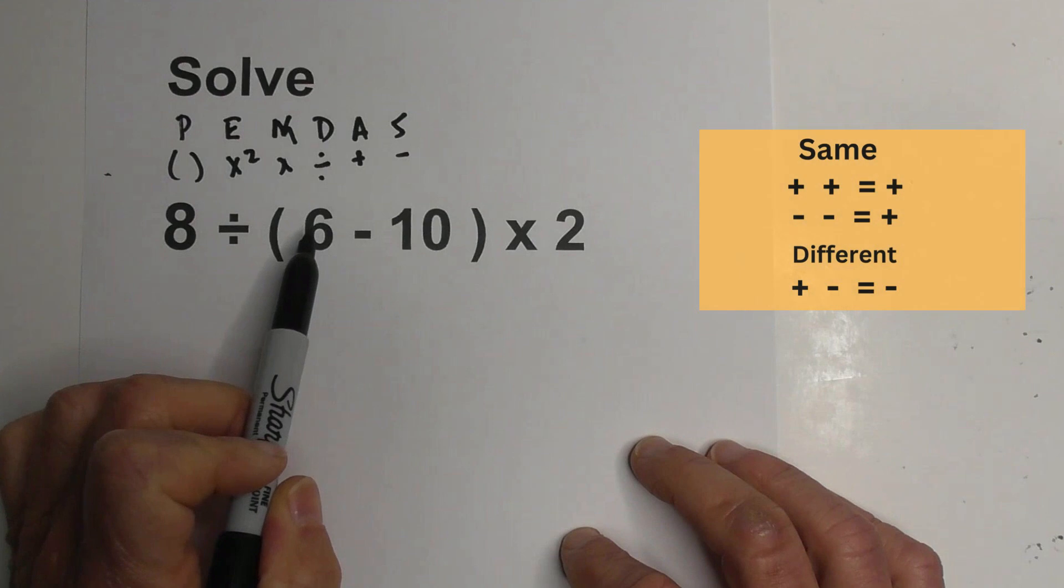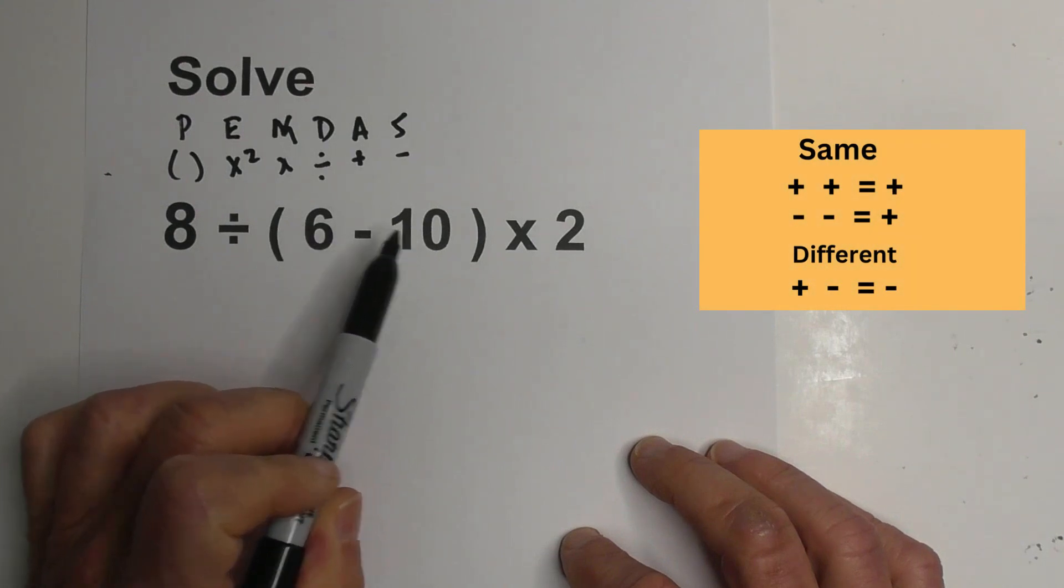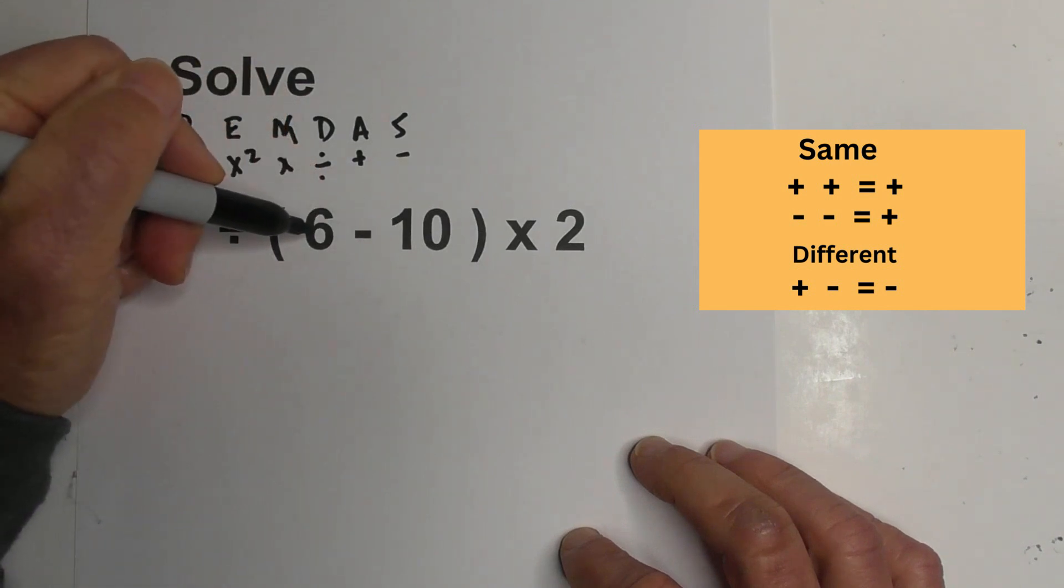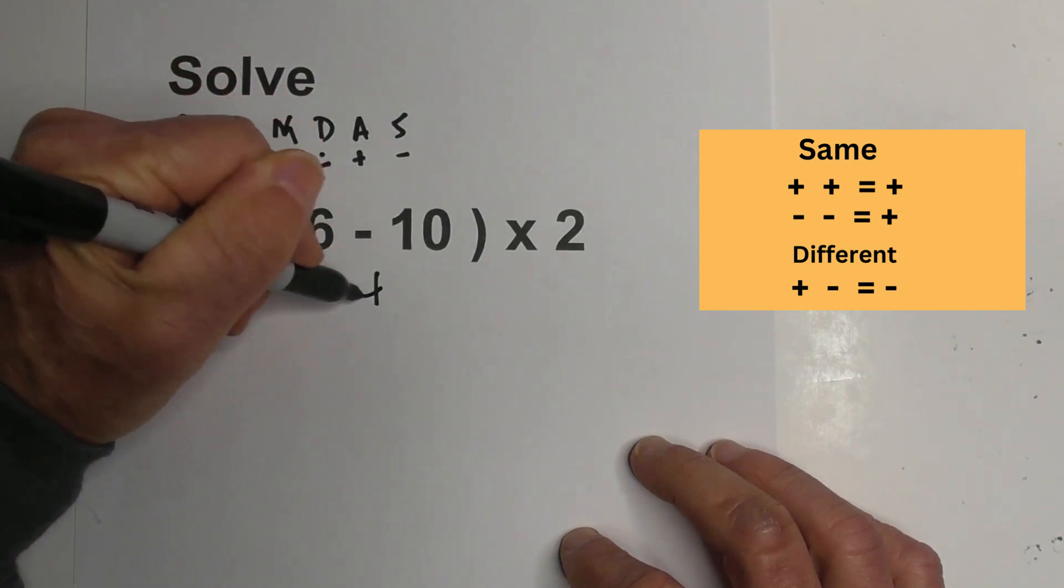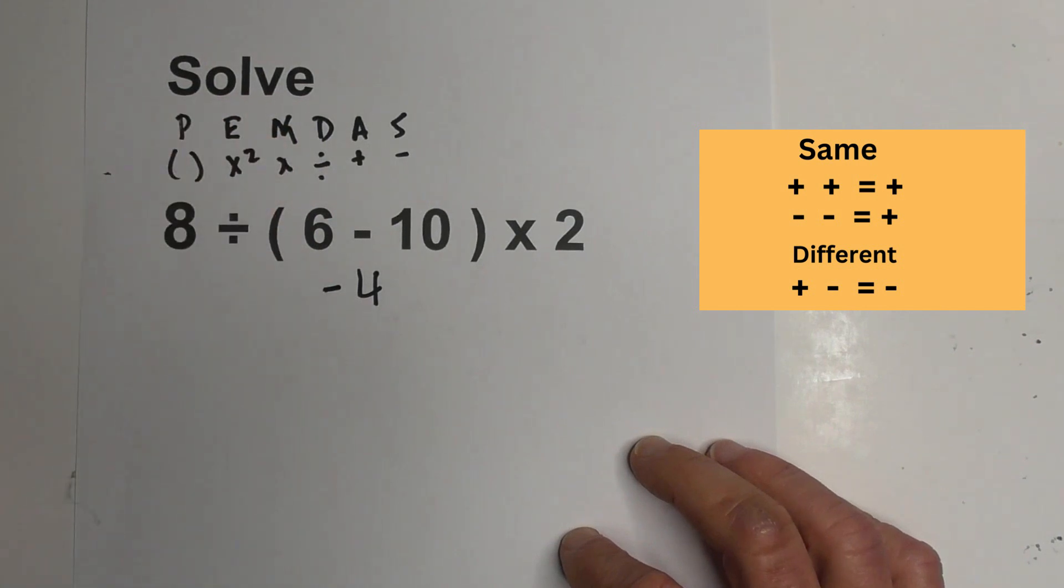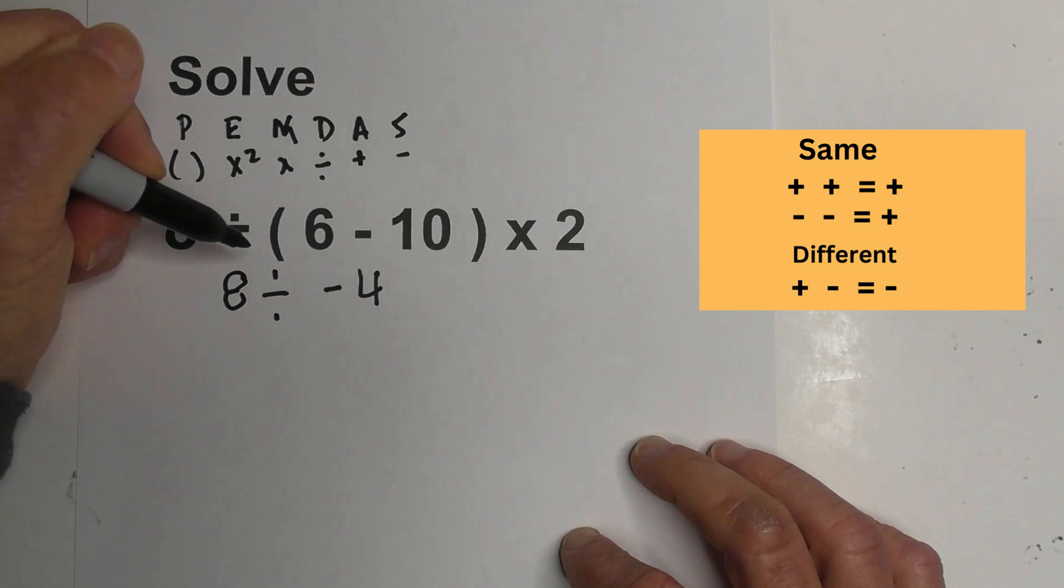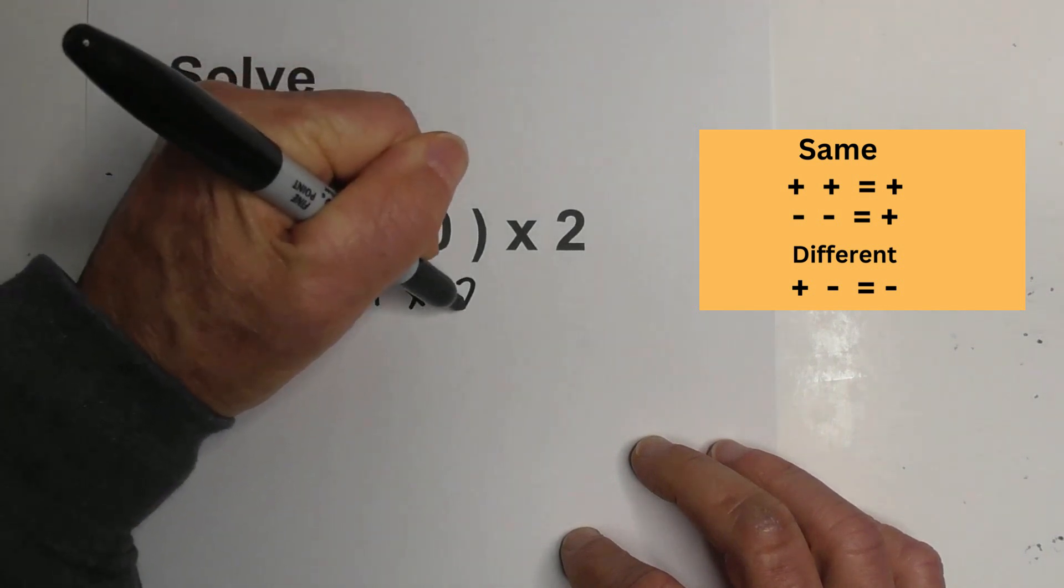We have a positive 6 and a negative 10. Remember, when you have a positive and a negative, it's going to be a negative. So 10 minus 6 is 4 and it's going to be negative. So now let's bring down this 8. So now we have 8 divided by negative 4 times 2.